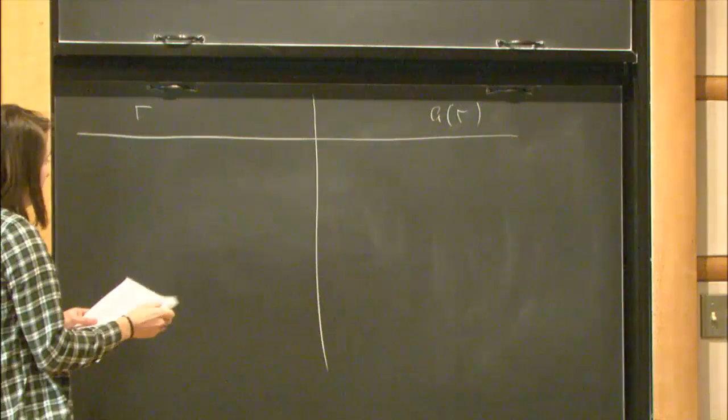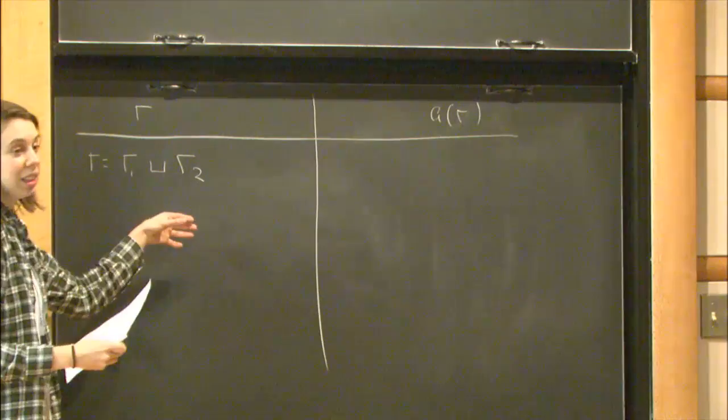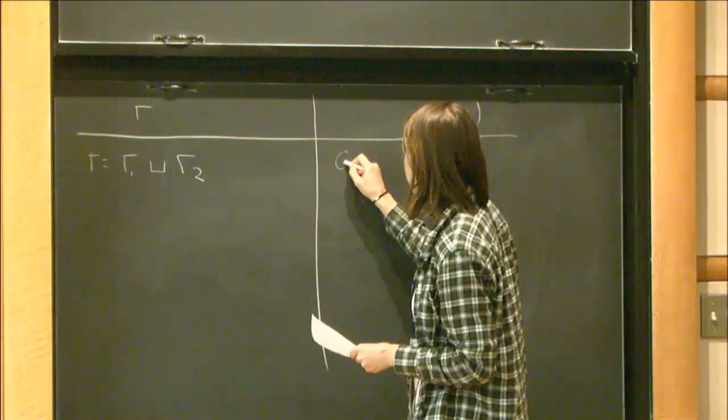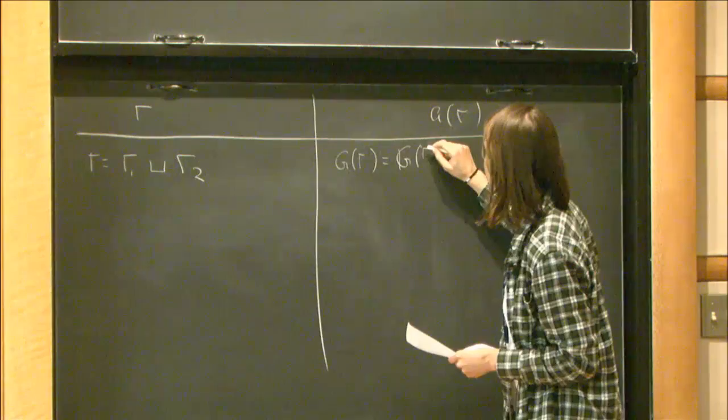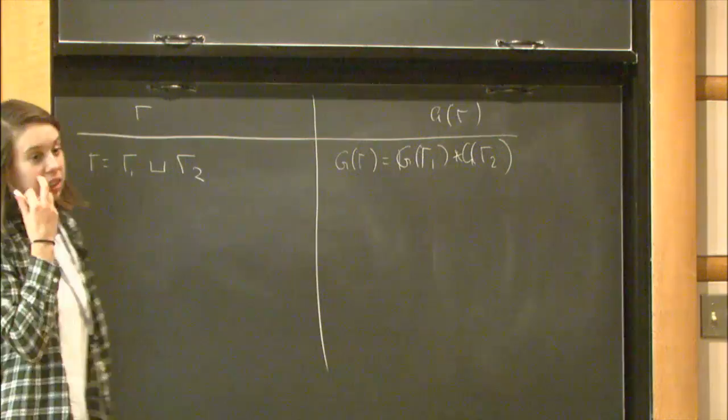For example: if gamma is not connected — it's a union of two connected components — then the group G(gamma) is the free product of the groups corresponding to those components.